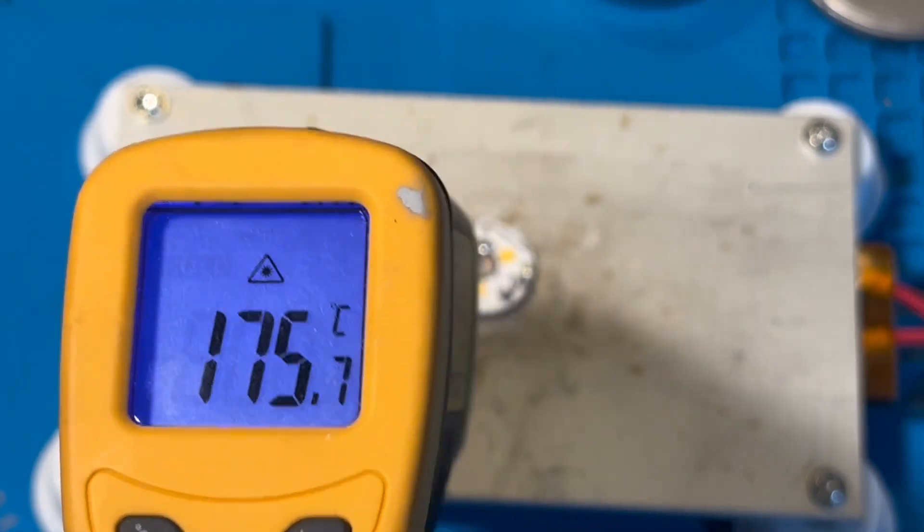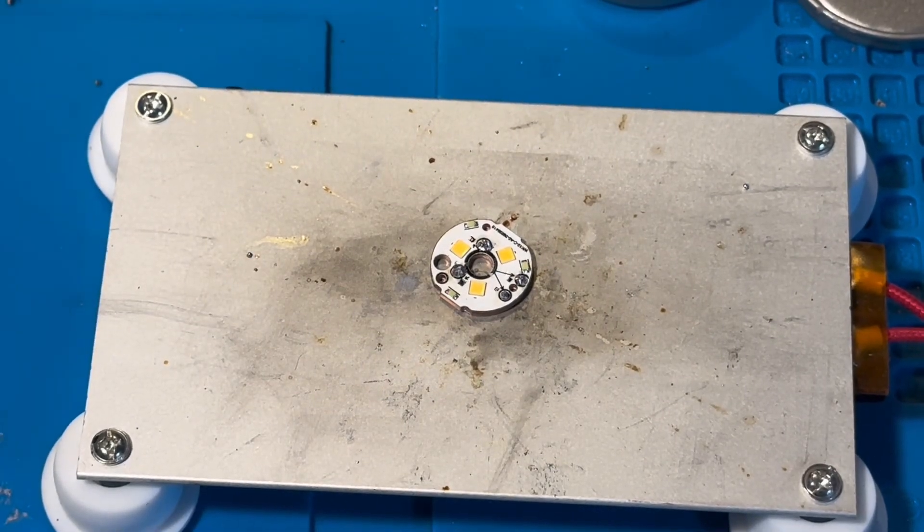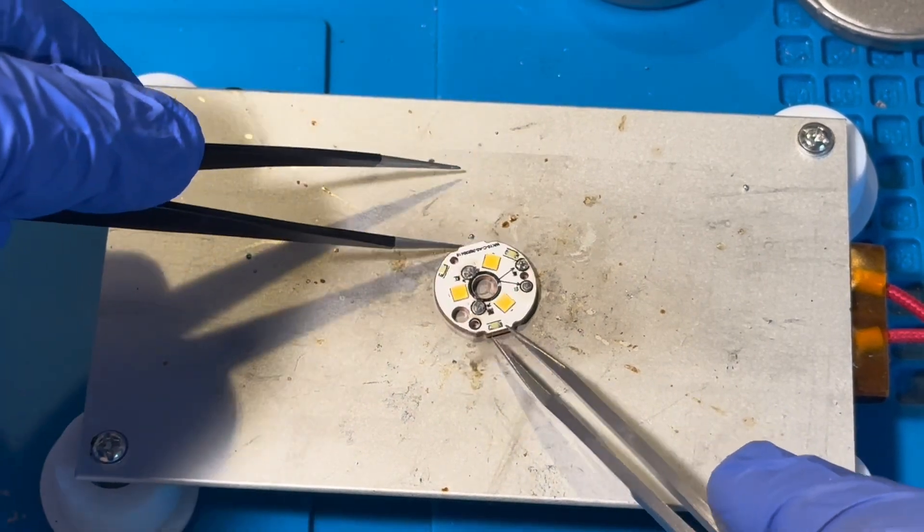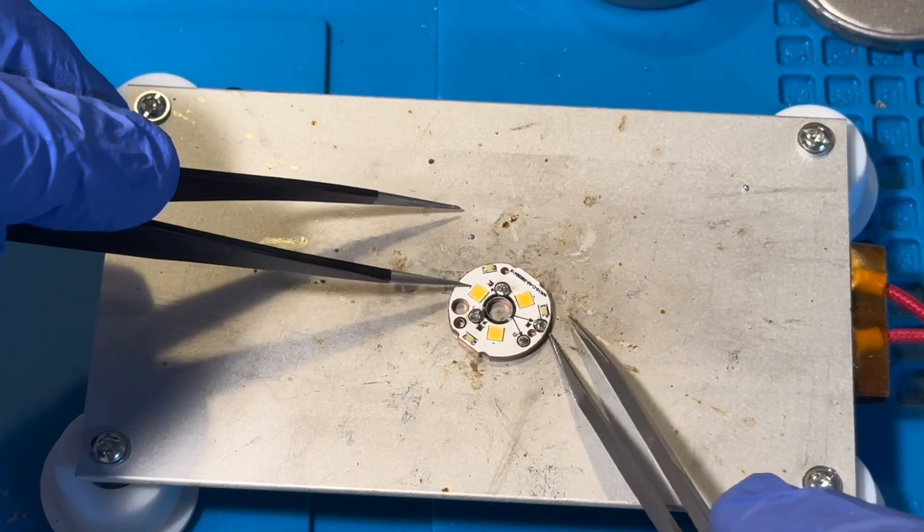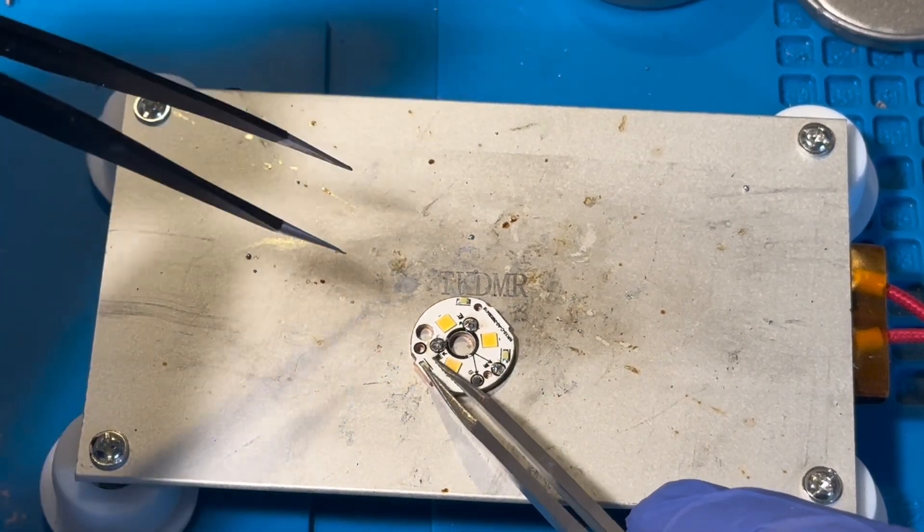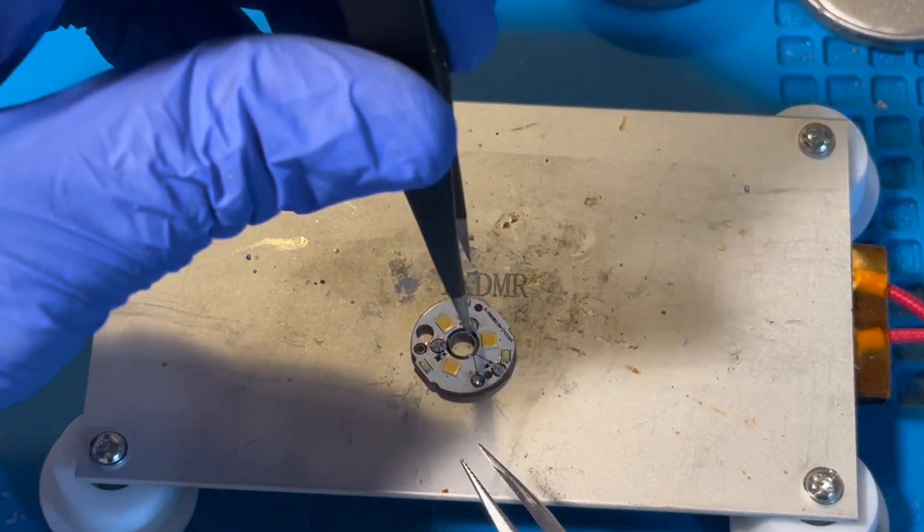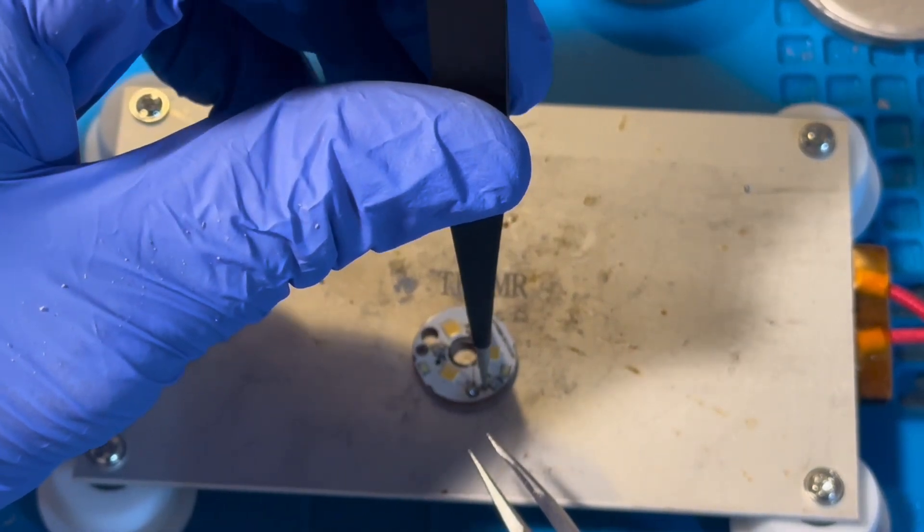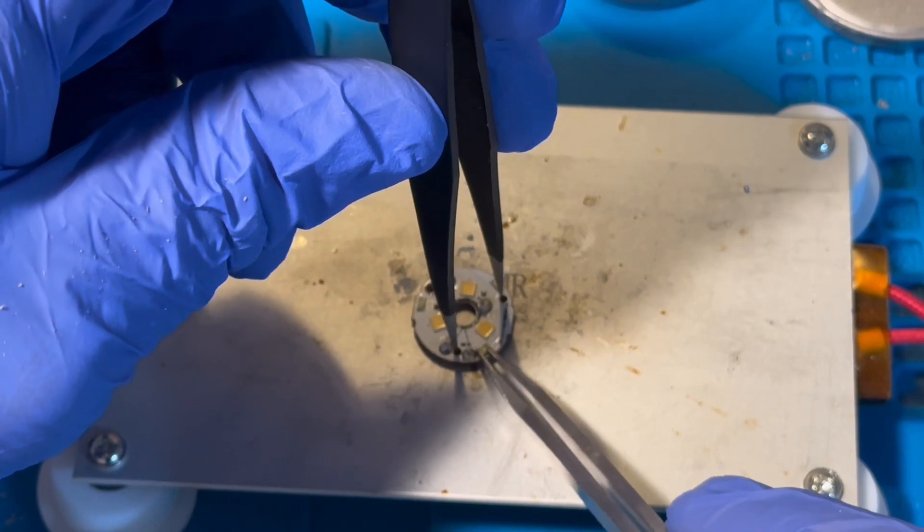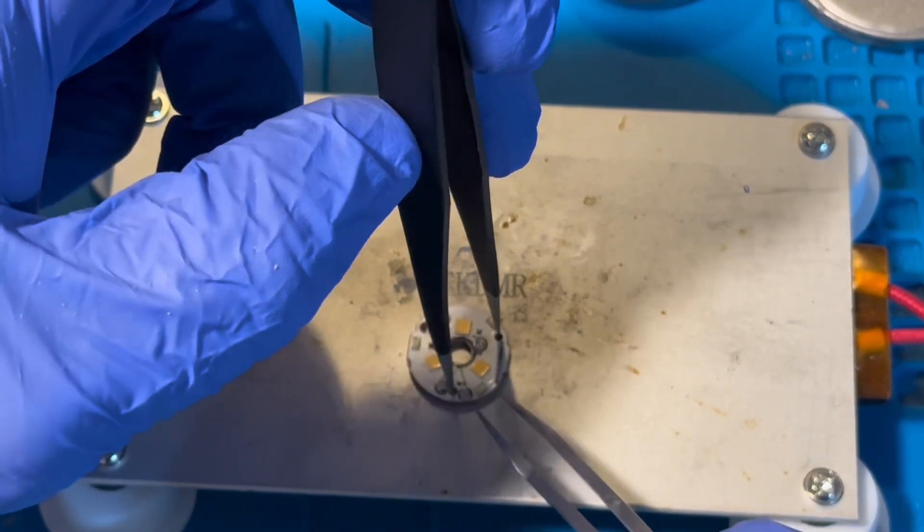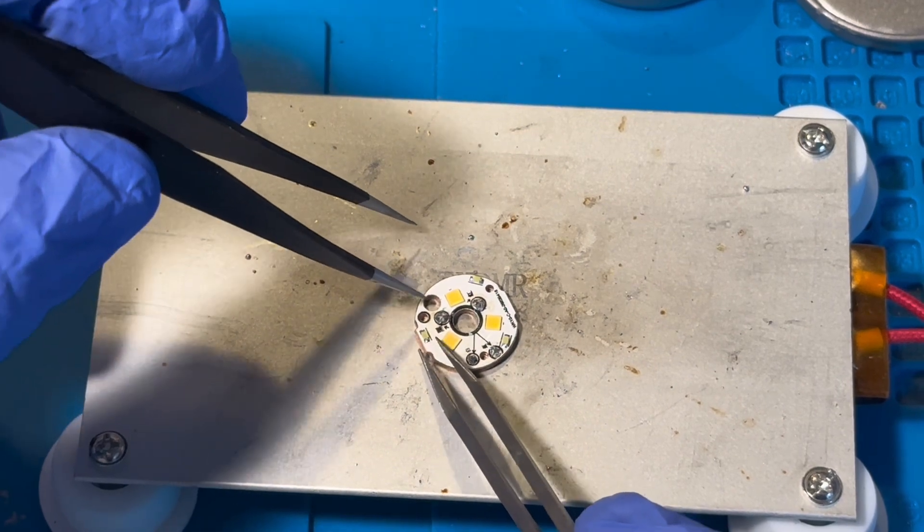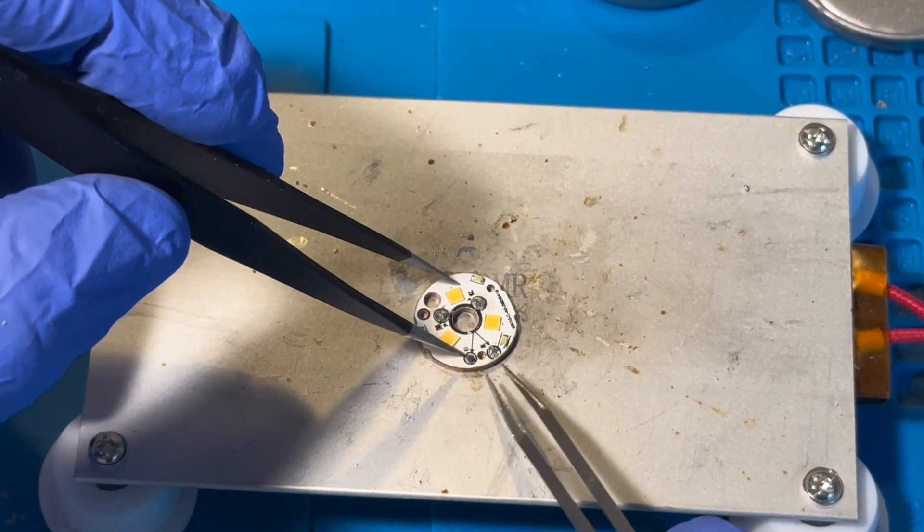And then, once it rises to the appropriate temperature, the solder will reflow. And you'll see it. It'll start to turn shiny. Sometimes there's smoke. But I attempted to take one of the LEDs off a little prematurely. And I ended up ripping off the top of the LED. There's a little piece of plastic on top. But the point here is just to make sure it gets warm enough. That it gets warm enough so that you can remove the LEDs safely, without damaging them, unlike what I did.